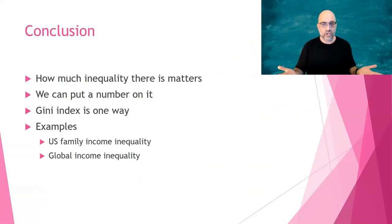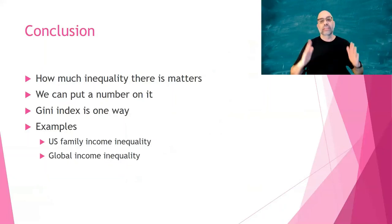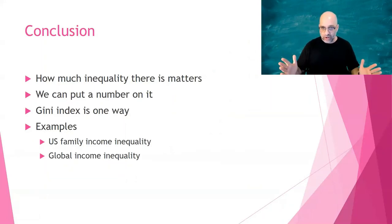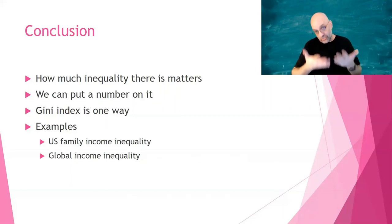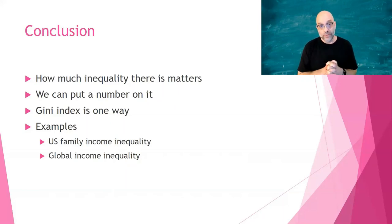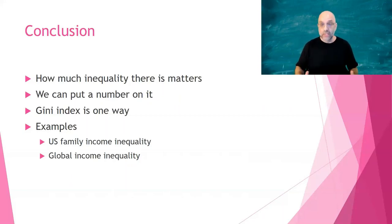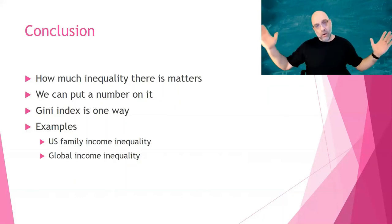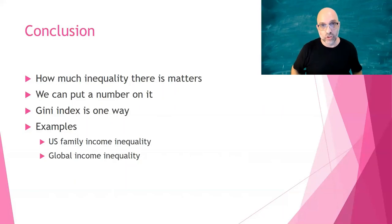To summarize: how much inequality there is matters. Inequality between incomes is a lot of different numbers — we turn it into one number, then we can analyze it: going up or down, higher or lower in different places, what makes it change. The Gini index is one kind of number you can use to describe an income distribution with an intuitive interpretation. I gave two examples: U.S. family income inequality compared to other countries and what we do about it, and global income inequality between and within countries.